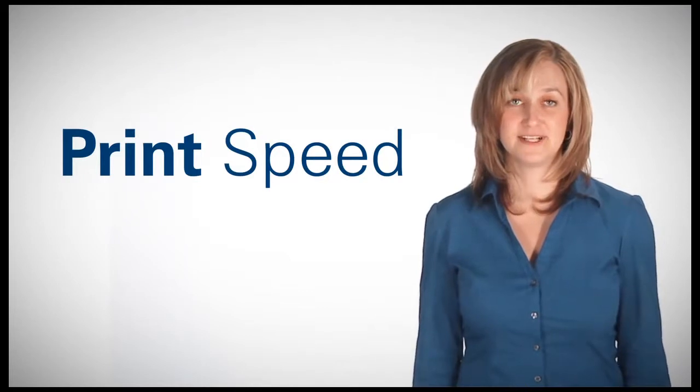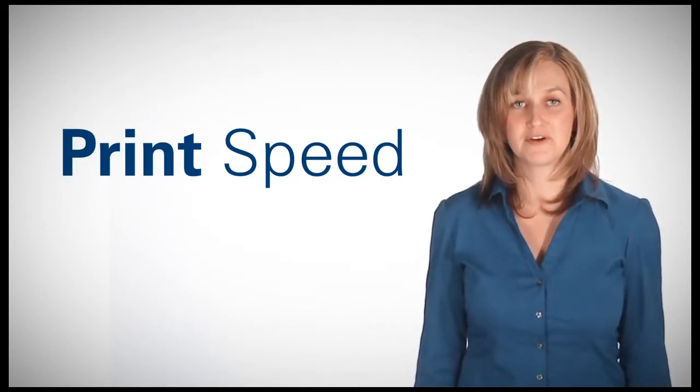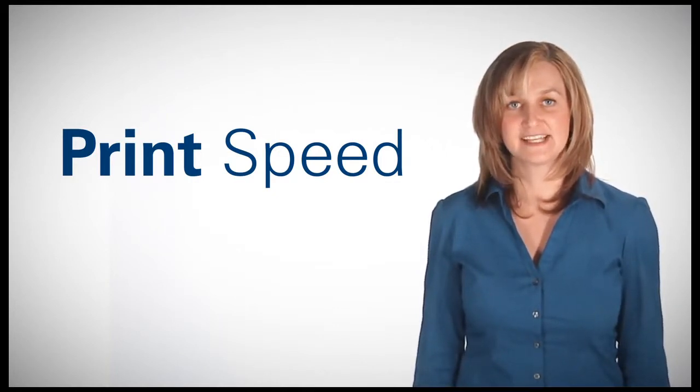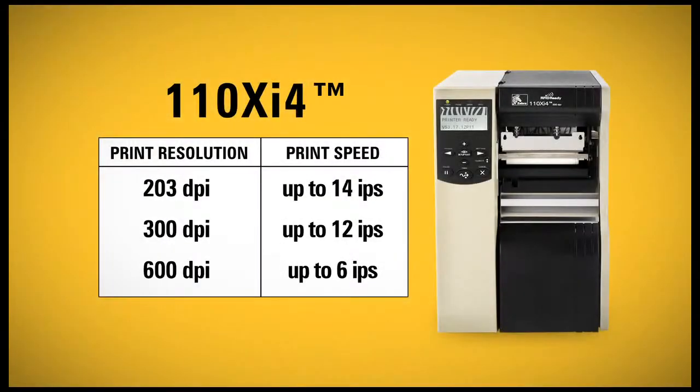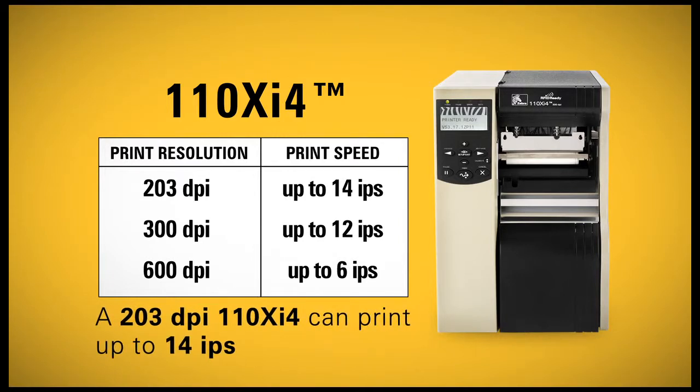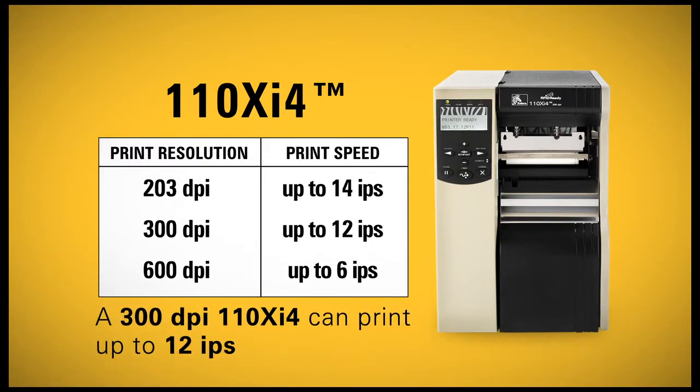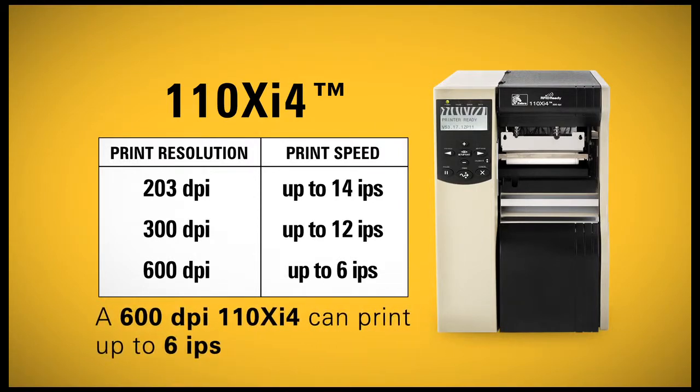How fast do the labels need to print? As DPI increases, the maximum print speed of a printer decreases. For example, the print speed of a 110Xi4 printer varies based on DPI. A 203 DPI 110Xi4 can print up to 14 IPS (inches per second), a 300 DPI 110Xi4 can print up to 12 IPS, and a 600 DPI 110Xi4 can print up to 6 IPS.